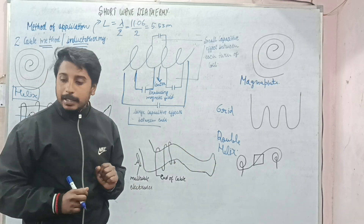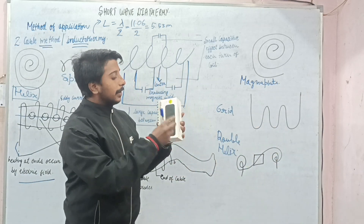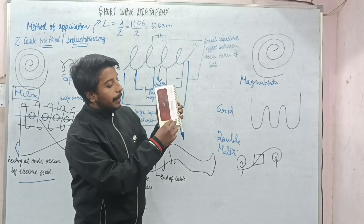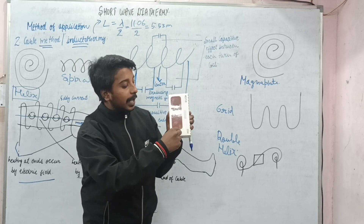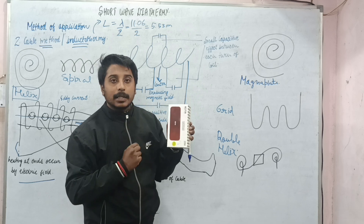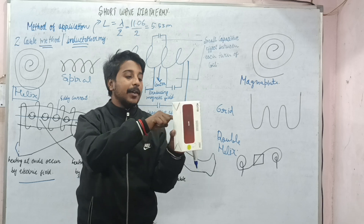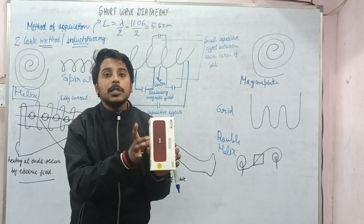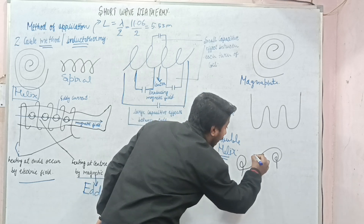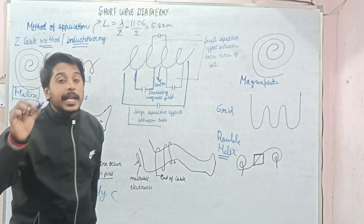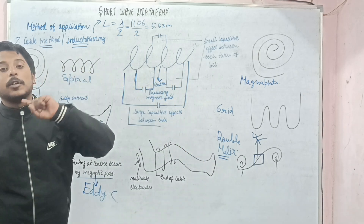Let us understand how the double helix arrangement is used. For example, on our back, I will make one helix here, then move and make a second helix. The cable starts at one point, forms the first helix, then moves sideways to form the second helix — it can also be used posteriorly. When using the double helix, the eddy current is formed at the area between the two helices, so heating occurs in that particular area.